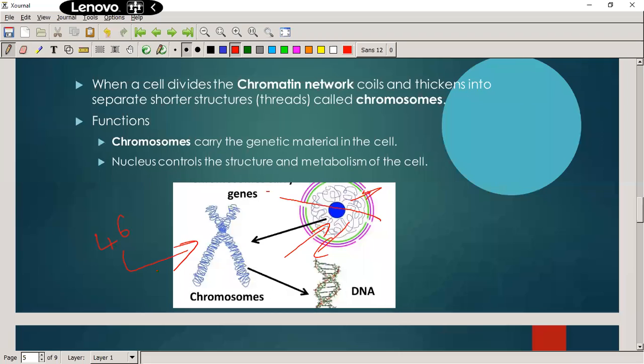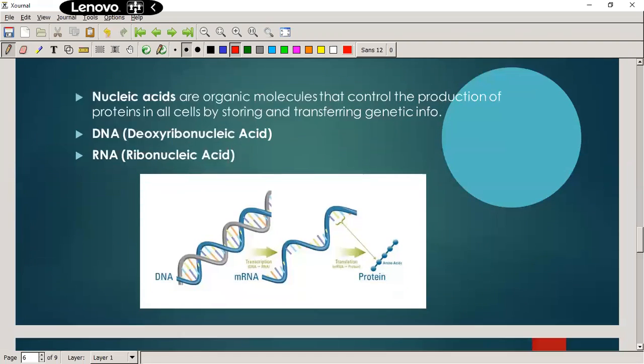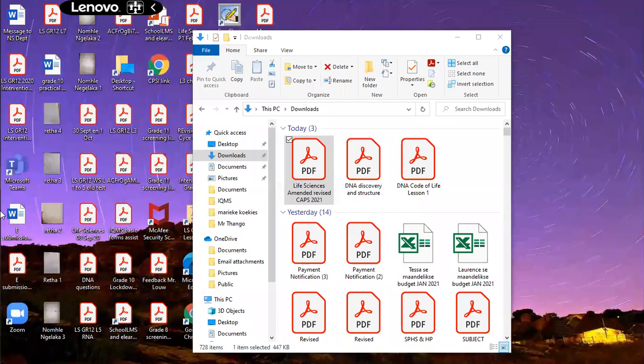Nucleus controls the structure and metabolism of the cell through the DNA. DNA consists out of, or nucleic acids consists out of nucleotides, so it is what we call a polymer. Poly standing for a lot, and it consists out of a monomer, monomer standing for one, and the monomers are called nucleic acids.